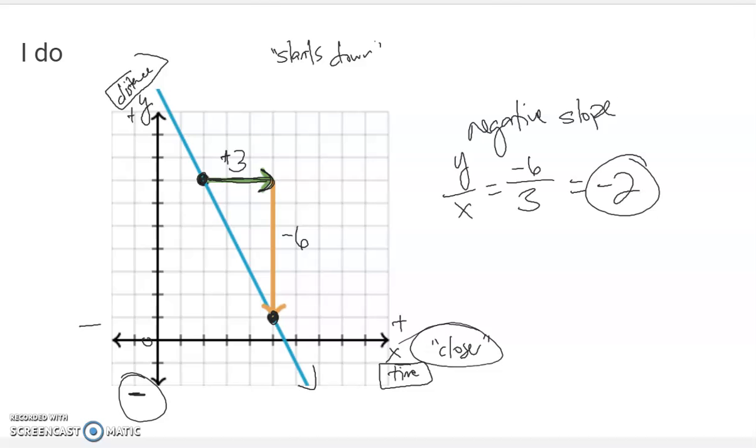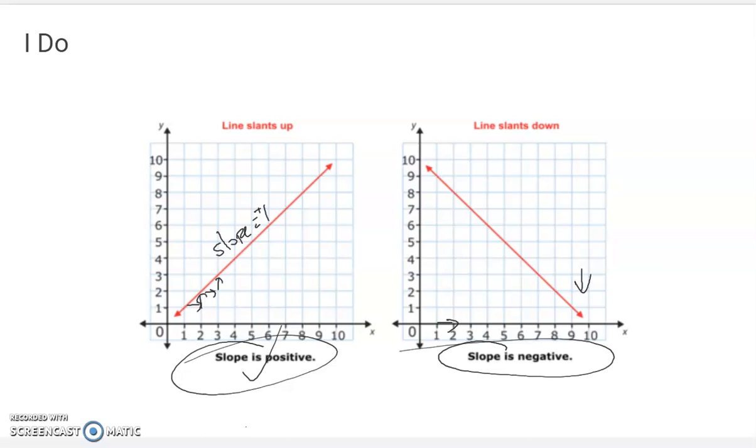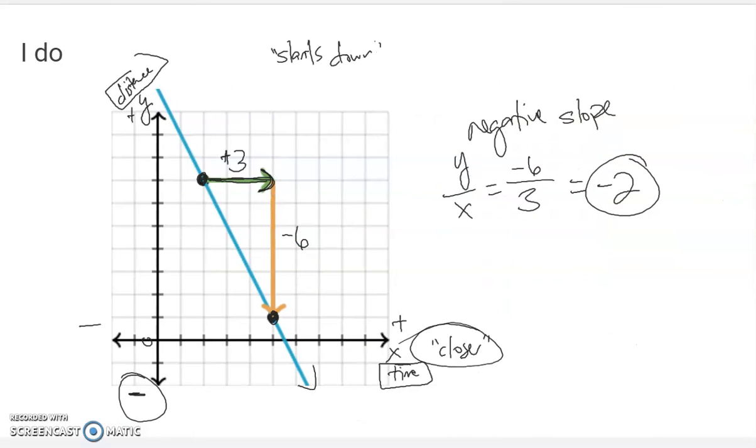And negative 6 divided by 3 is negative 2. We would say that line has a slope of negative 2. So lines that slant downward are going to have a negative number for their slope, up positive. So we can go back to this one. This had a slope of positive 1. On this one, each time x goes up by 1, y goes down by 1. So this would have a slope of negative 1. That's how it works. It's very similar. You've just got to pay attention to direction now. Am I going up or down?